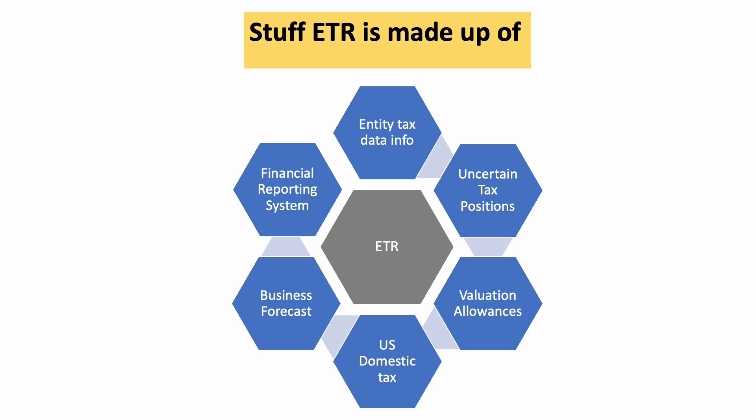Business forecast comes into play during the quarterly closes. During the quarter close you are working with a combination of actual data and forecast data, and that's how you use business forecast to arrive at a prorated income number, which you then apply to your income tax expense to calculate the effective tax rate. Another key component of ETR is the financial reporting system, which is the source of your profit and loss statement and balance sheet. Some entities use Hyperion, while others use various kinds of financial reporting systems.